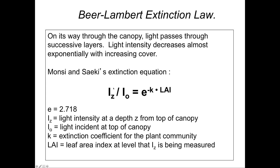Light availability at this point in the forest is an exponential function. E equals 2.718 — this is a mathematical constant — raised to the minus K, where K is the extinction coefficient for the plant community. So this is a negative exponential curve, and K is one of the parameters describing the shape of that exponential decay.